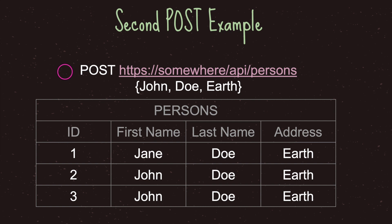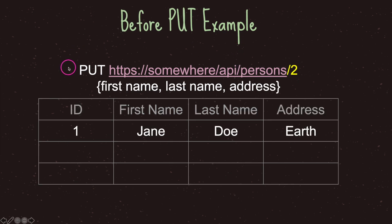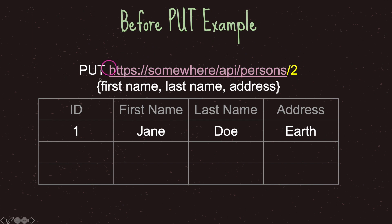If you don't want the server to keep creating new identification numbers for the same exact information, you would use the PUT method. Unlike the POST method, the PUT method expects that the client provides the identification number. So our API has persons/2, meaning we want to access the persons table with the specific row that has identification number 2. The PUT method requires that you give it all the information — since the table requires a first name, last name, and address, it expects all three.